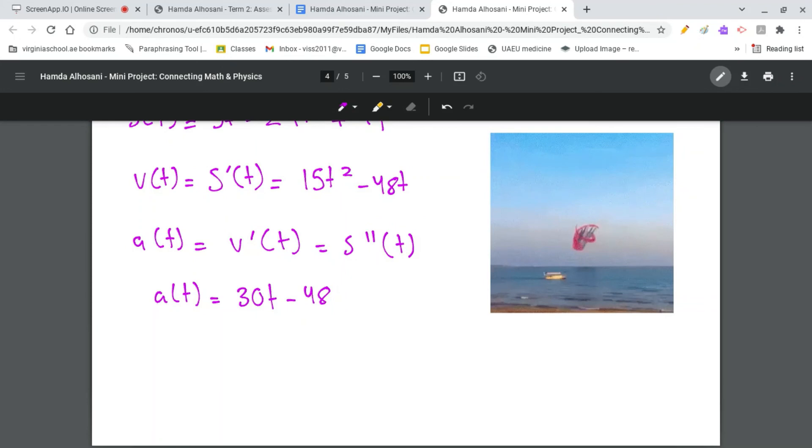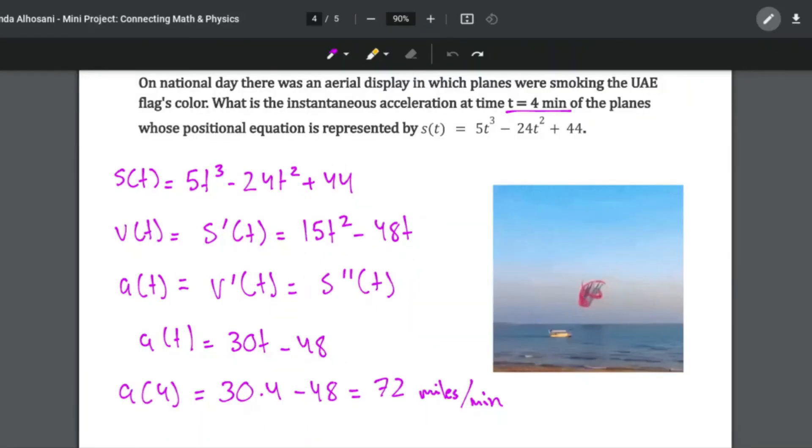So, a(4) is equal to 30 times 4 minus 48 equal to 72 miles per minute squared.